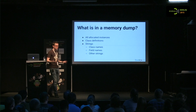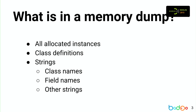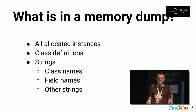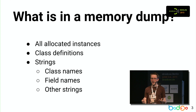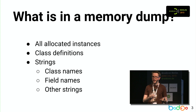So a memory dump is usually a huge file with a lot of stuff in it. As the name implies, it's a dump of your application memory while it's running. There are basically three important things in there that are extremely useful. First, we have all the objects that your application created while it's running. However, the instances themselves are not very useful if you don't have class information — the class information tells you what fields are what and the relationship between classes.